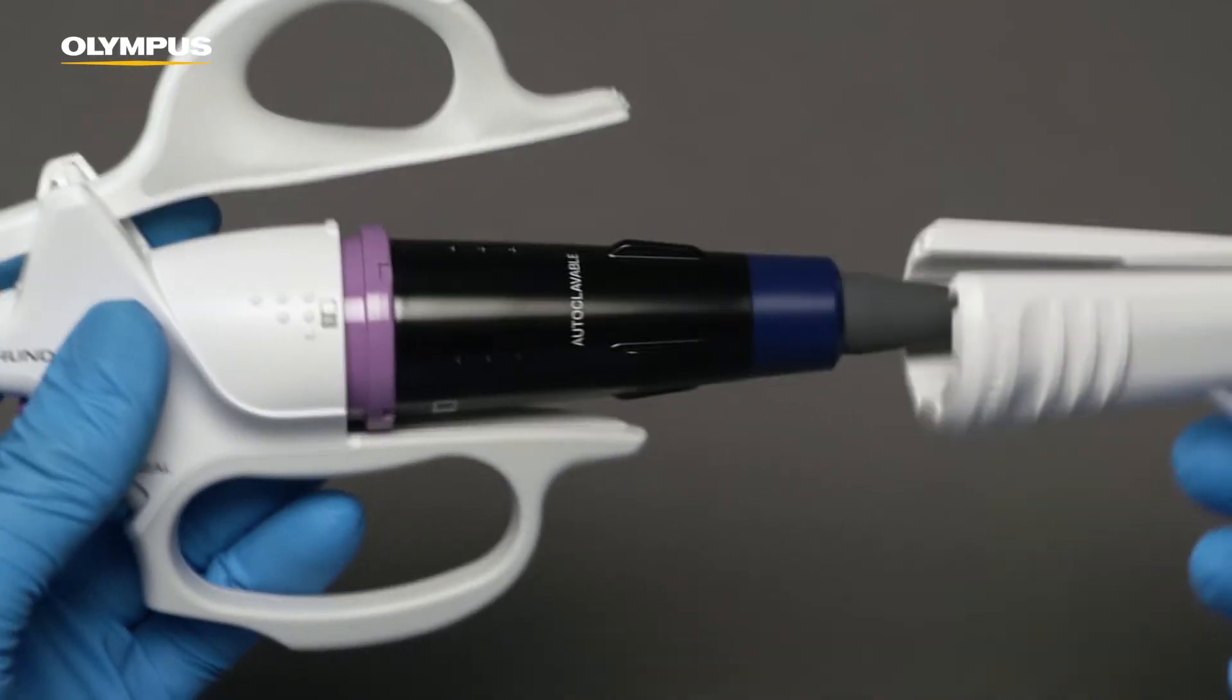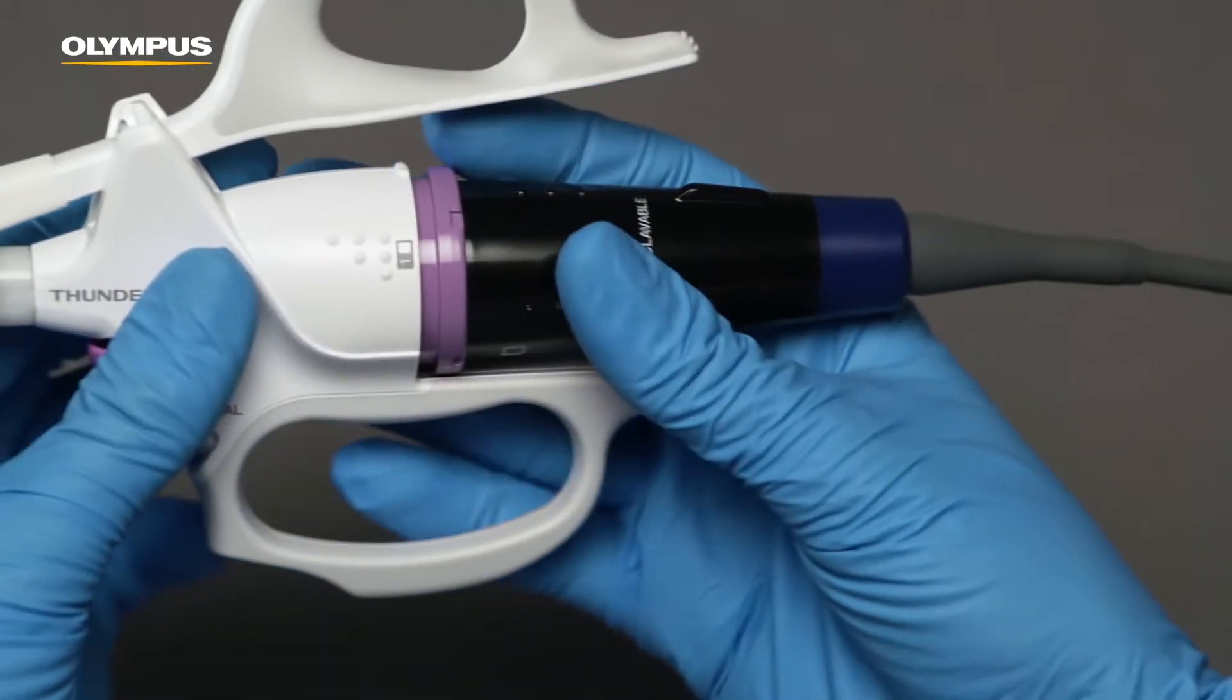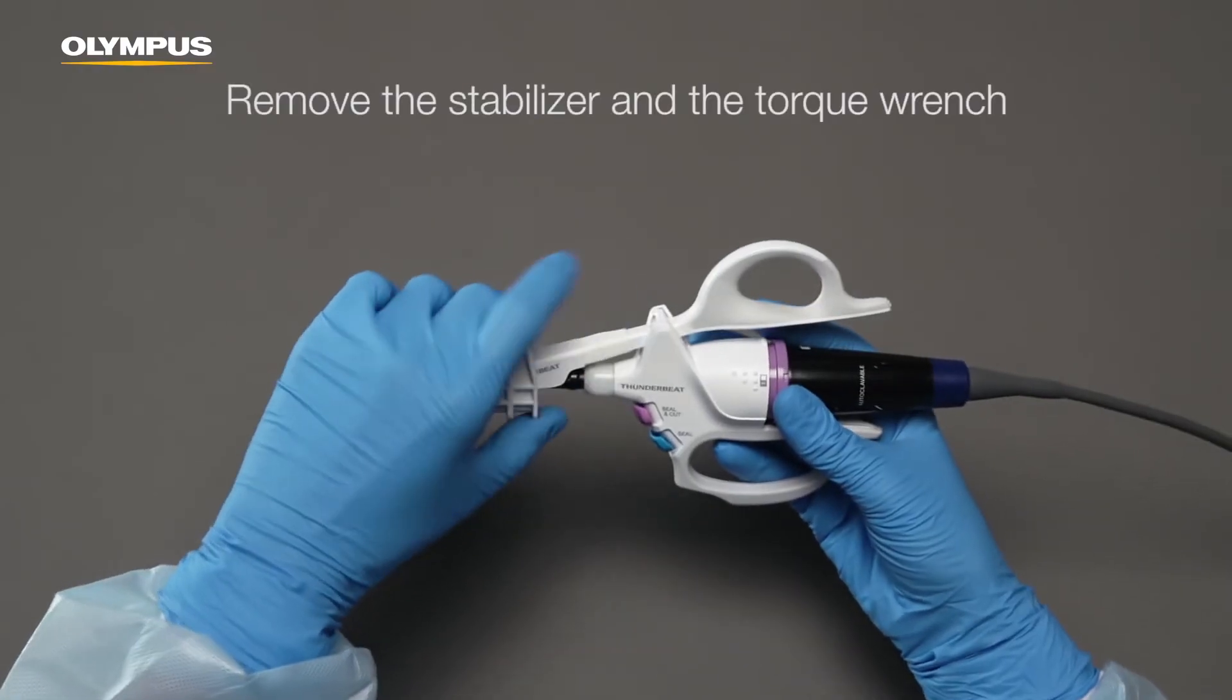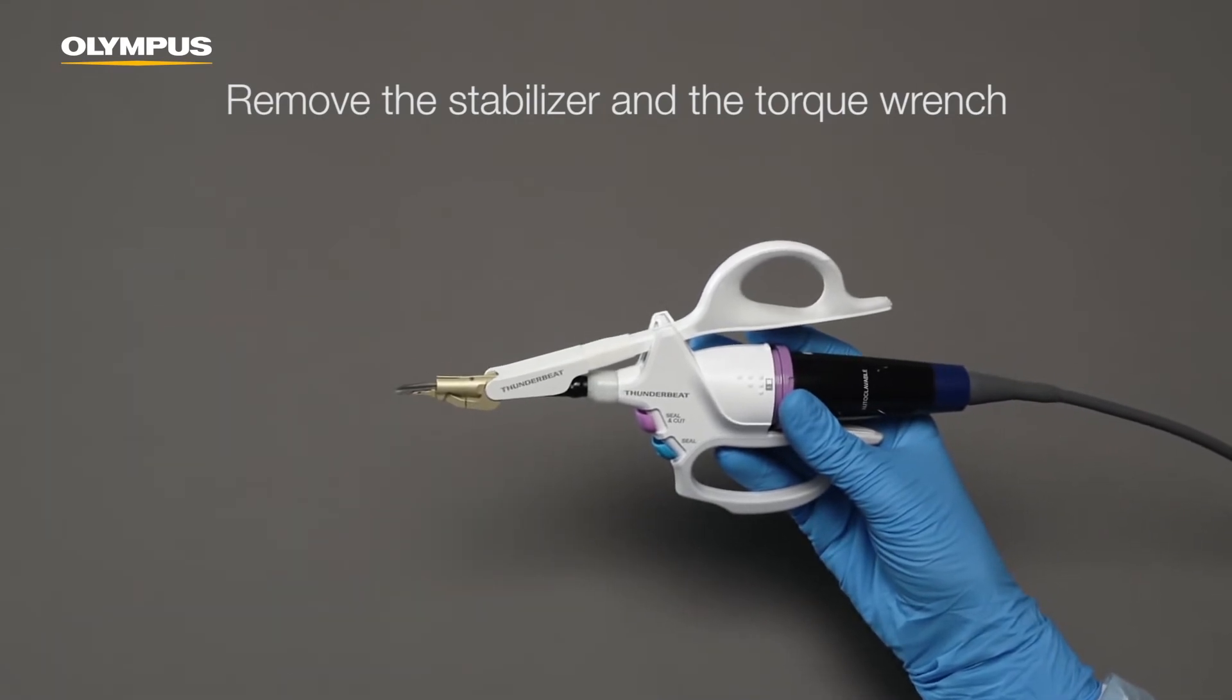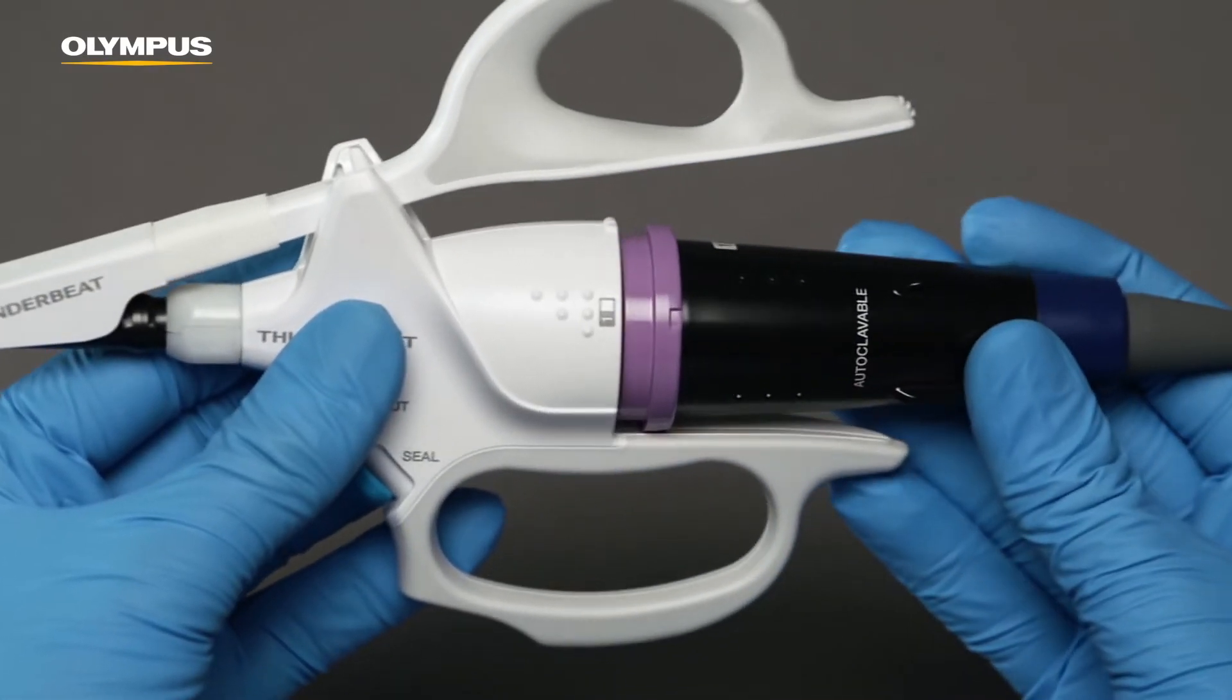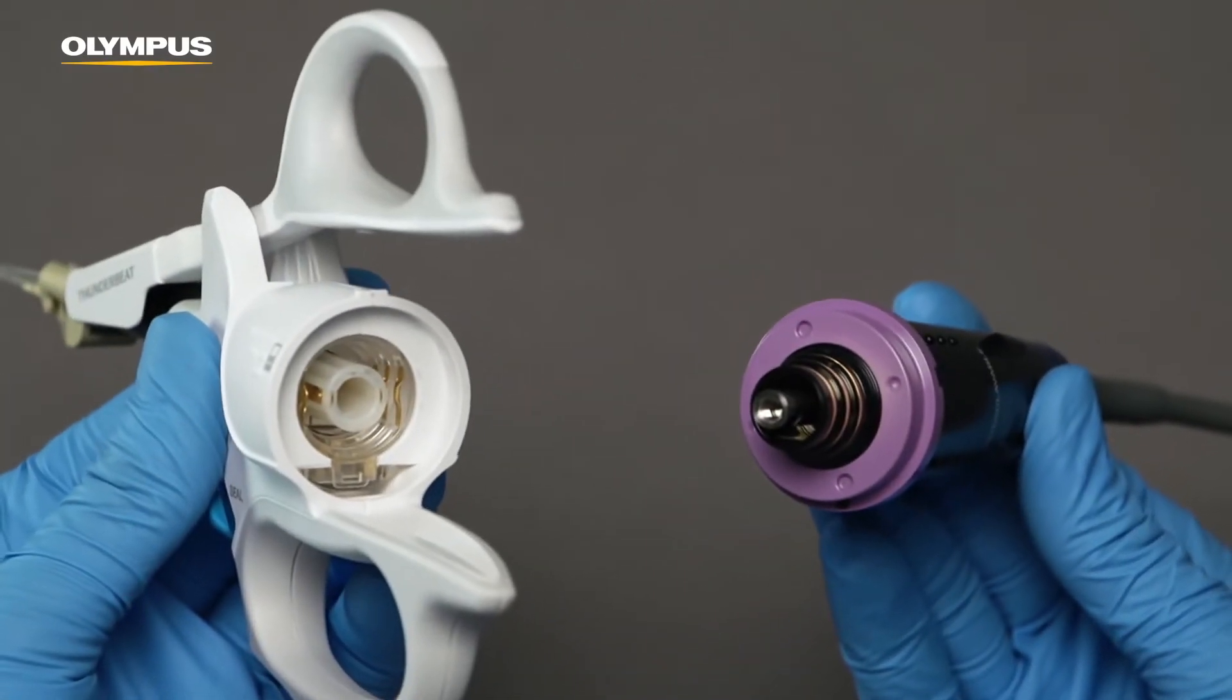Remove the stabilizer first and then the torque wrench. Hold the device at its base and disconnect the transducer.